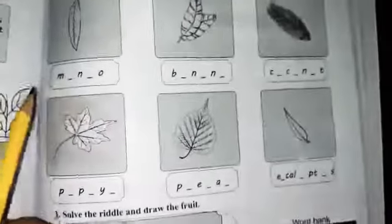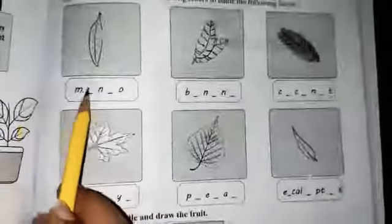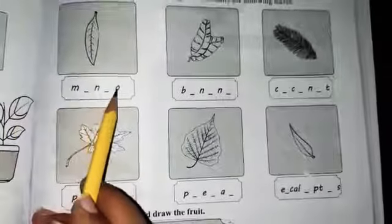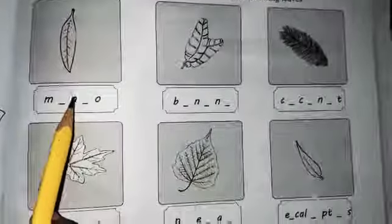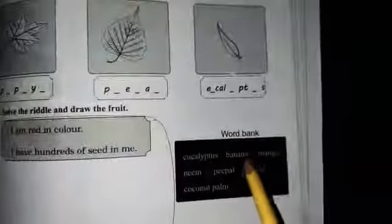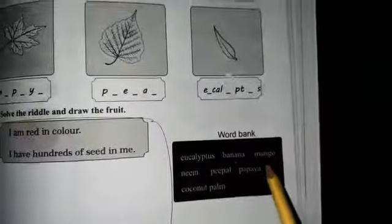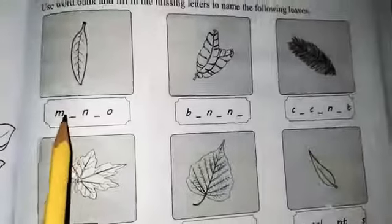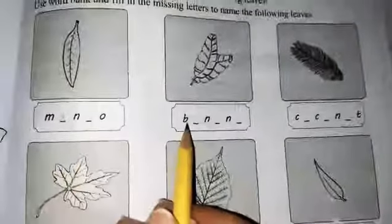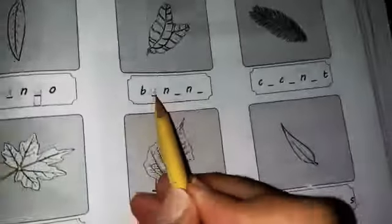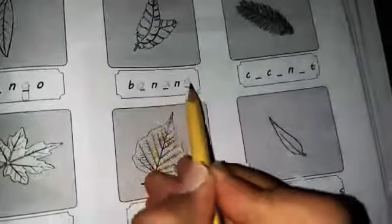Students, what we have to do? We have to find the names. The first name is M-N-O. Which leaf is this? Excellent. Find in the word bank: eucalyptus, banana, mango. Which leaf is this? Excellent. This leaf is mango leaf. M-A-N-G-O, mango. Now, this leaf is... which leaf is this? Yes. This leaf is banana. Write banana. B-A-N-A-N-A, banana.